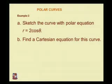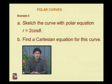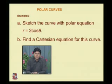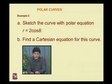Third example: sketch the curve with polar equation r = 2cosθ and find the Cartesian equation. First, discuss symmetry: the equation is unchanged when theta is replaced by minus theta, because cosine is an even function — cos(−θ) = cosθ. This means the curve is symmetric about the initial line (the x-axis or polar axis).